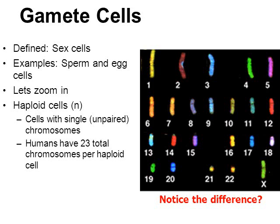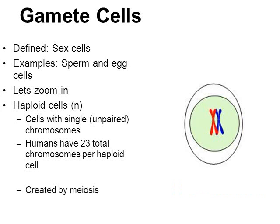That's quite different from what we said about diploid cells. If cells are diploid in humans, they have a total of 46 chromosomes. But cells that are haploid only have half that amount — 23 chromosomes. These haploid cells are created by the cellular division process known as meiosis.